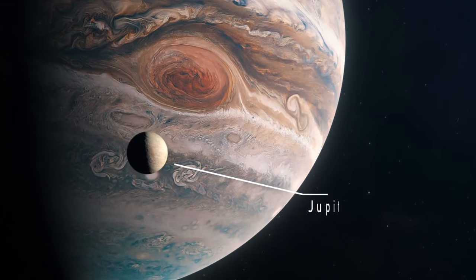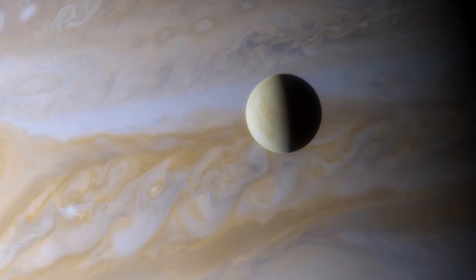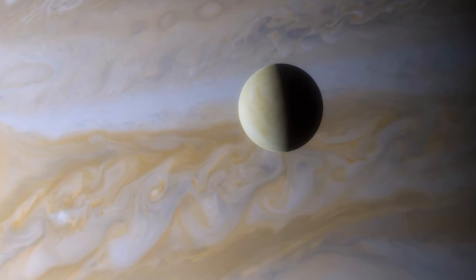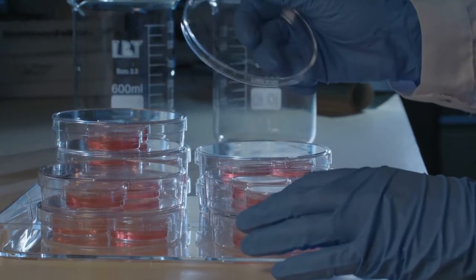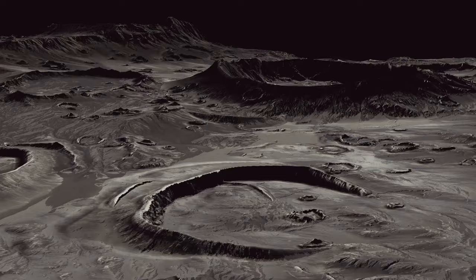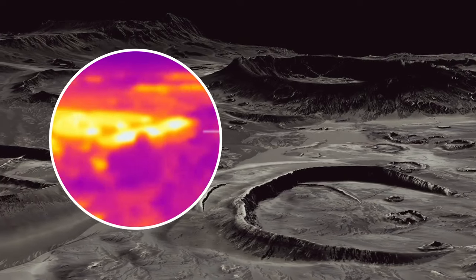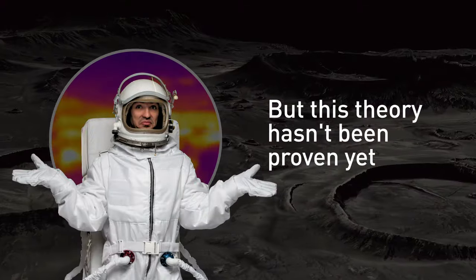Some experts say that the particles of magnetite are not really similar to those found on our planet, and Earth's contaminants are likely to be the source of organic molecules. Jupiter's moon Europa has a bizarre red tinge. Some of the theories explaining this phenomenon have suggested the reason is frozen bits of bacteria, which are also responsible for the mysterious infrared signal the moon gives off. But this theory hasn't been proven yet.